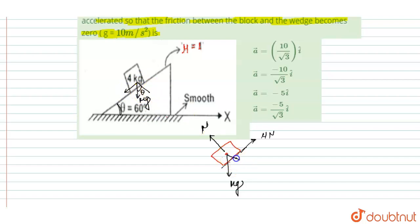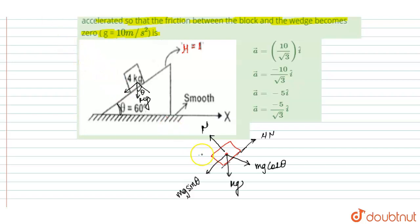The component of Mg along the incline is Mg sin theta, and along the perpendicular direction is Mg cos theta. The pseudo force acts in this direction with value F equal to M times A. The angle here is theta, and this angle is 90 minus theta, making this also theta.